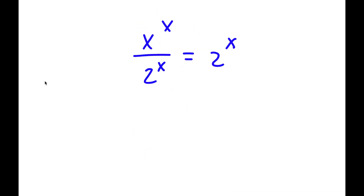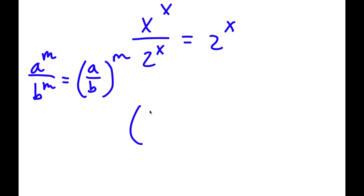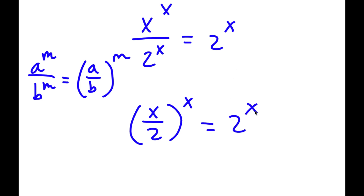Now, if I have something in the form a to the power of m over b to the power of m, this is equal to a over b to the power of m. So x to the power of x over 2 to the power of x is going to be equal to x over 2 to the power of x, which is equal to 2 to the power of x.